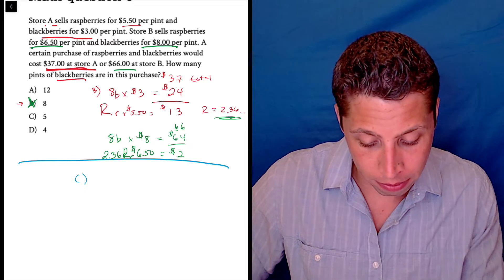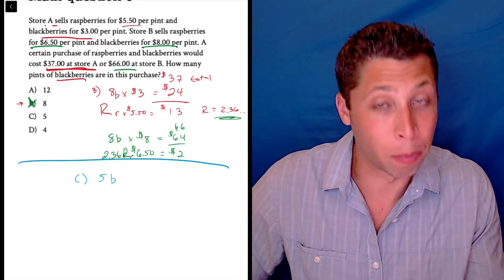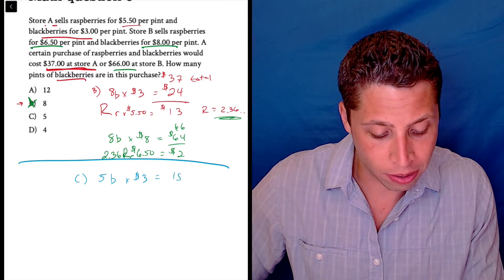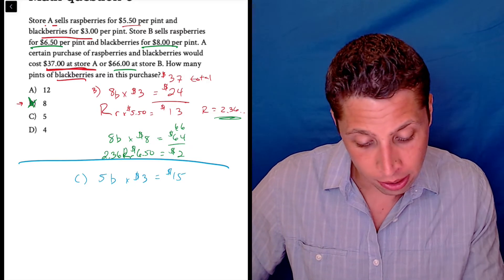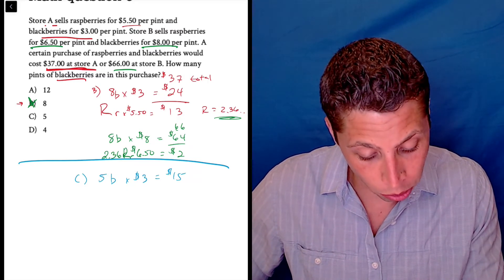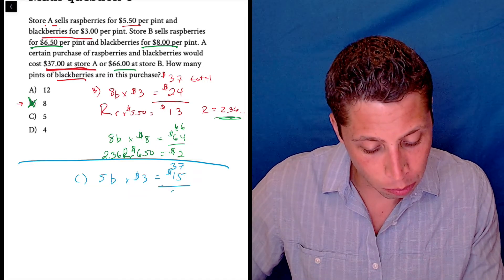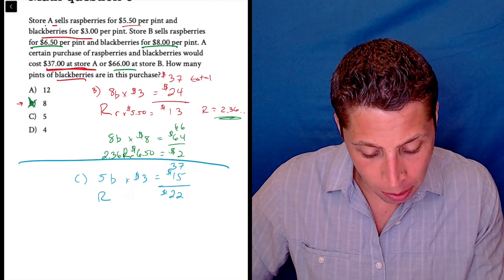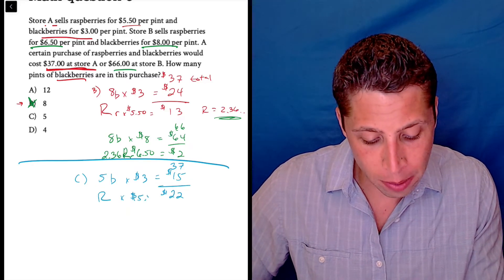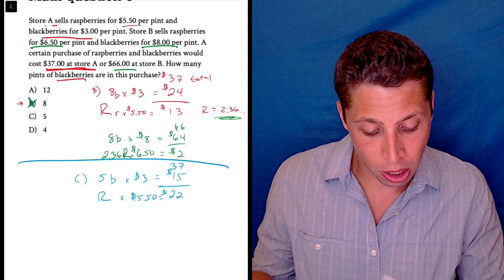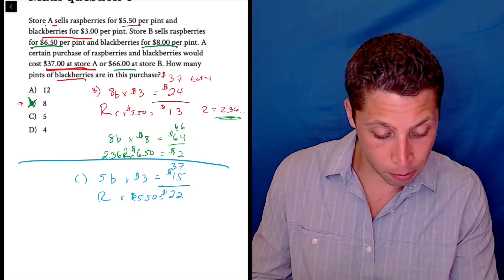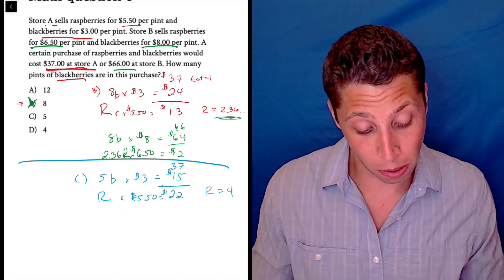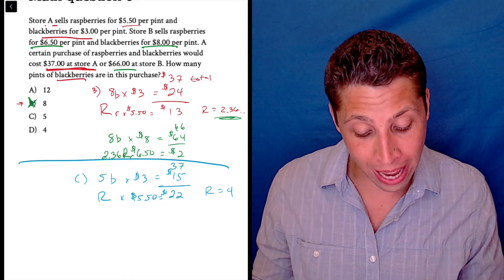Here, we have 5 pounds or pints of blackberries at $3 a piece. Notice it's the same setup. That's $15. And it's still a $37 total that we're subtracting from. So that leaves me with $22. And remember, the R number of raspberries are $5.50 a pint. So we're still going to divide, $22 now, by $5.50. And that's nicer. That's 4. Hmm, that seems good. Now let's see. We've still got to make sure that it makes sense at store B.